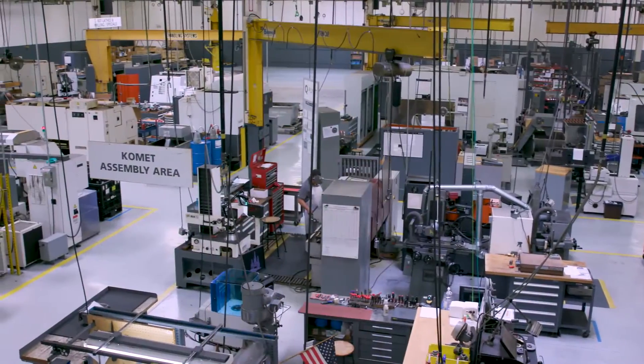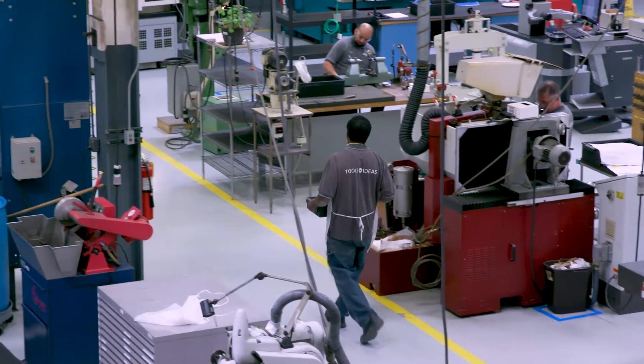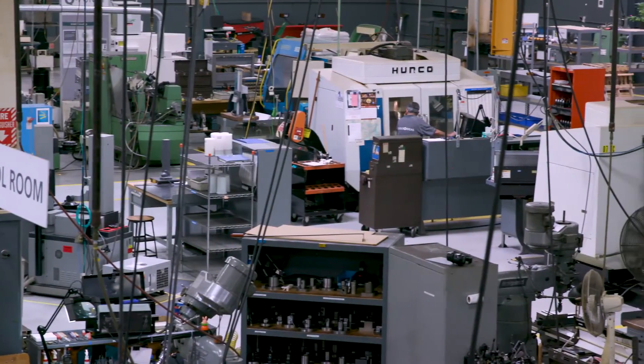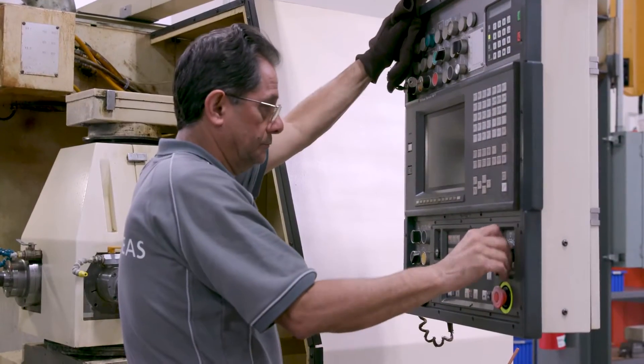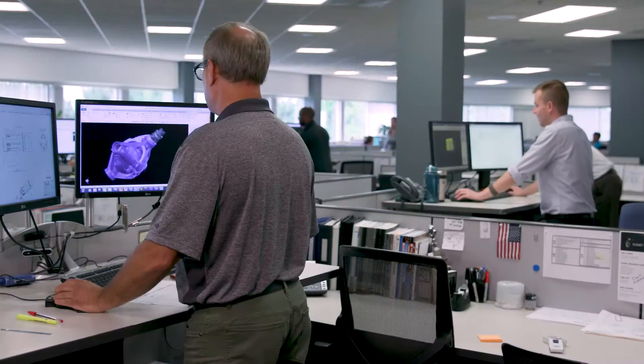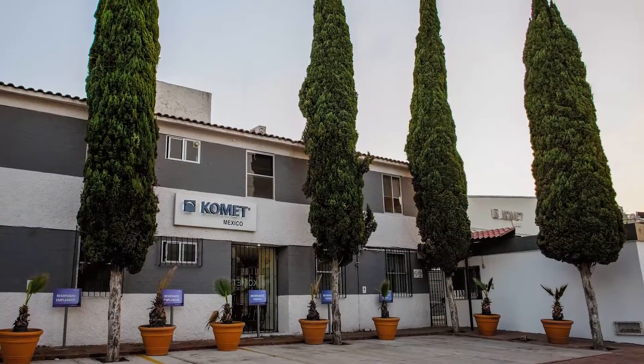The company proudly employs over 1,600 staff throughout its 20 subsidiaries and maintains a presence in more than 50 countries. COMET services the North American market with facilities in the United States, Mexico, and Canada.